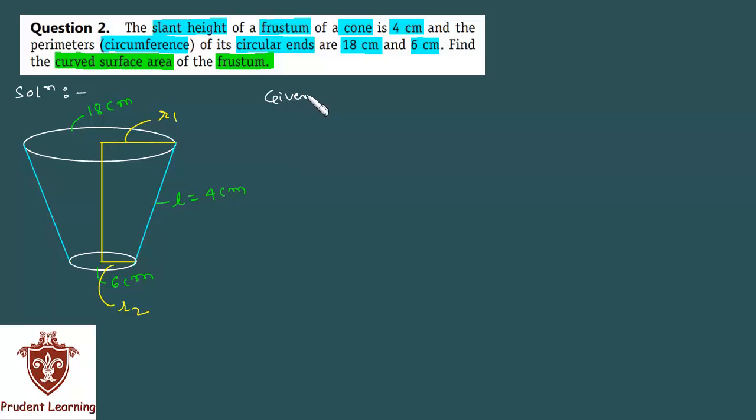Here we are given that slant height of the frustum is 4 cm and circumference of the upper circular end is 18 cm, therefore 2πR1 = 18 cm, and circumference of the lower circular end is 6 cm, therefore we have 2πR2 = 6 cm. Here we have R1 as 18 over 2π. Similarly we have R2 as 6 over 2π.